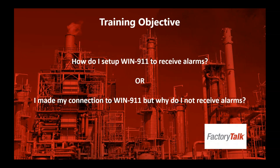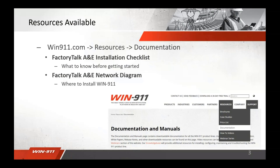Prior to getting started, I'd like to share some key resources for configuring WIN 9-1-1 with Factory Talk. The first document is the installation checklist, released in March 2019, which defines the critical information for this configuration. Next is a Factory Talk network diagram that provides a visual representation of a typical system and helps you understand where to install WIN 9-1-1 and the licensing requirements. Both documents are available at www.win911.com under Resources > Documentation.